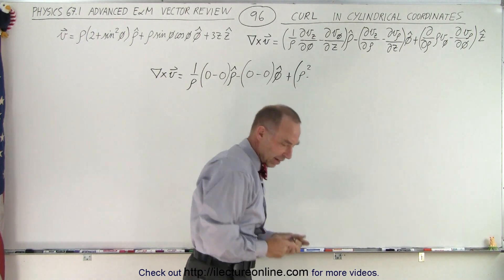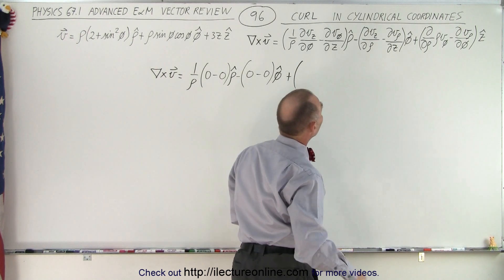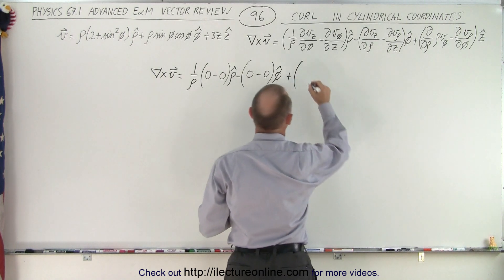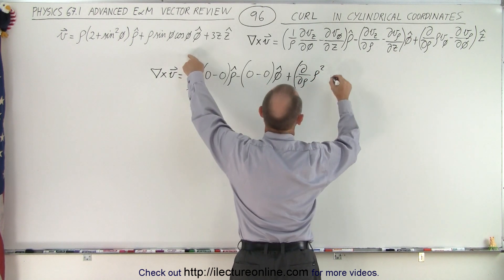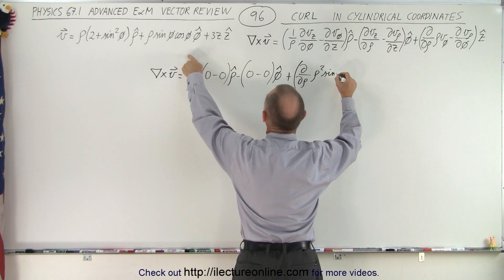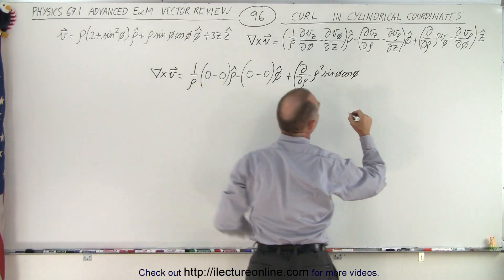Oh, I forgot to put in my partial derivative, can't do that. So I'm going to have the partial derivative with respect to rho of rho squared times the sine of phi times the cosine of phi. That's this right there.